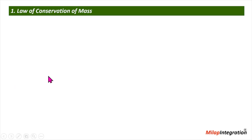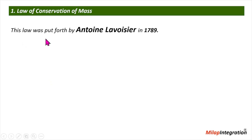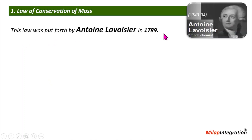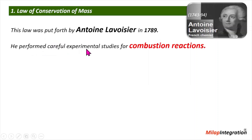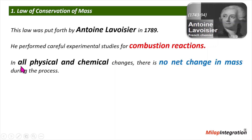This law was put forth by Antoine Lavoisier in 1789. He performed those experiments very carefully, and then based on that he concluded that in all physical and chemical changes there is no net change in matter.